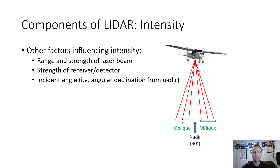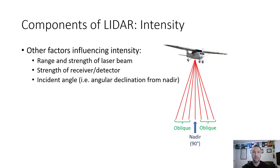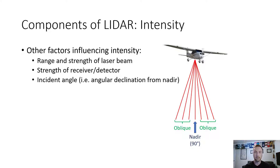A couple of other factors influence intensity: range and strength of the laser beam. How far away the laser origin is from the surface it's striking — if you're flying in an airplane very far from the surface, that affects the intensity. The strength of the receiver also matters, as newer receivers have higher power than older ones. And then the incident angle — the angle of declination from nadir. Nadir is directly 90 degrees from the source to the surface; anything off nadir is oblique, and that also affects intensity.